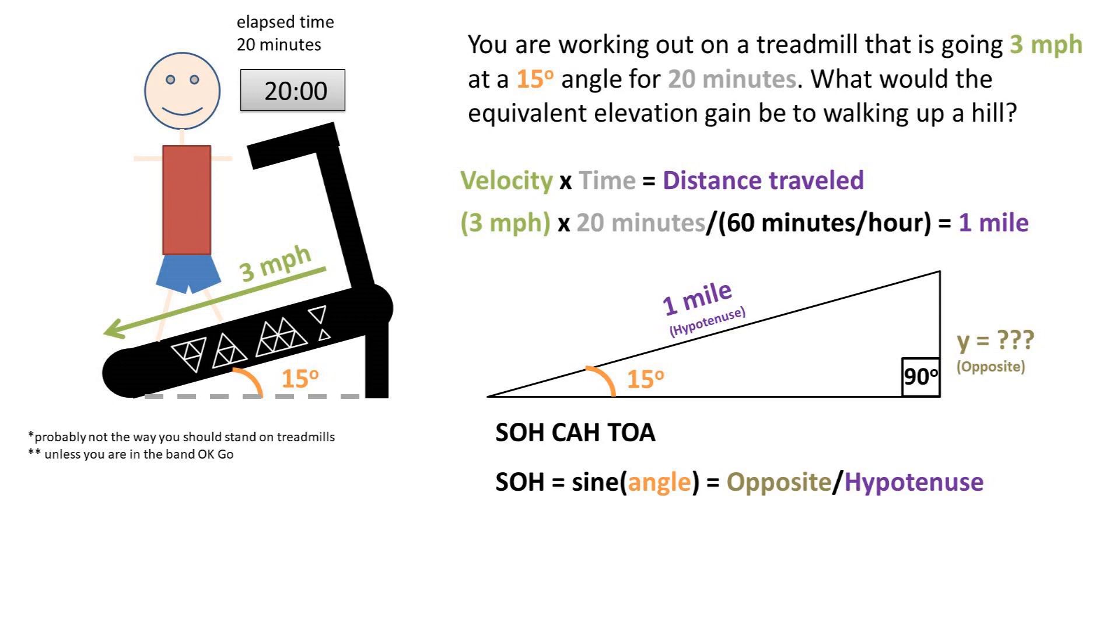SOH CAH TOA, of course, only works for right triangles or triangles with one 90 degree angle. Using algebra, we can rearrange this to get what we were solving opposite to one side. We get the sine of the angle times the hypotenuse equals the opposite side.